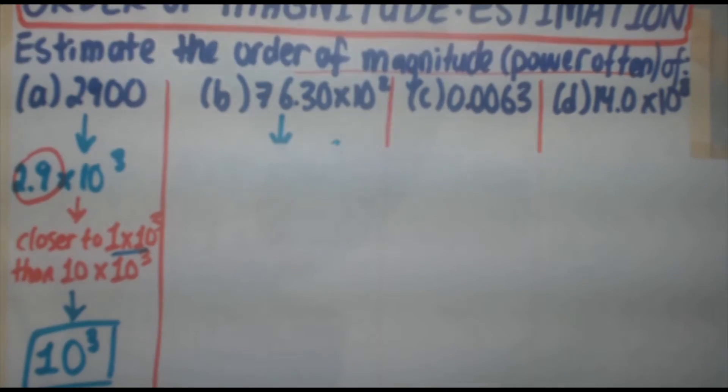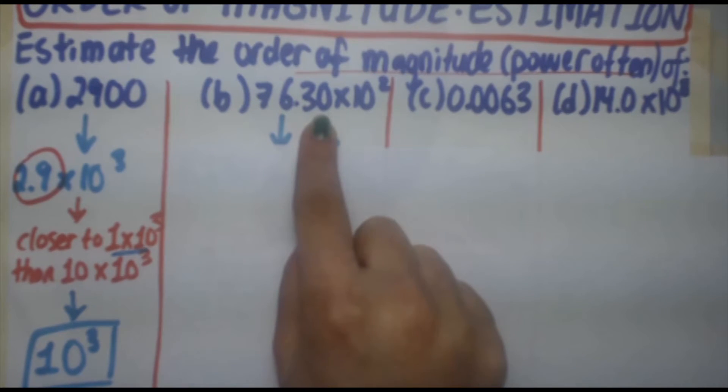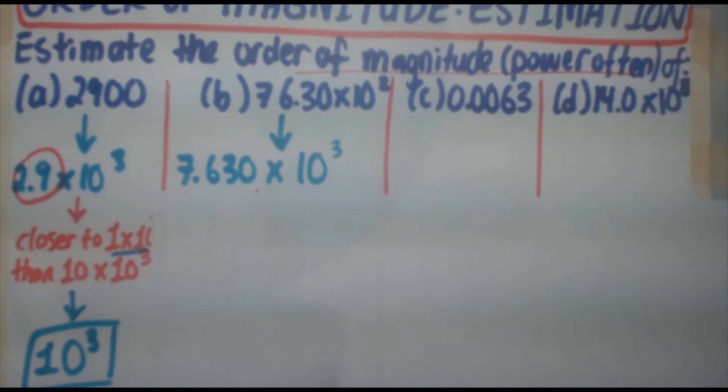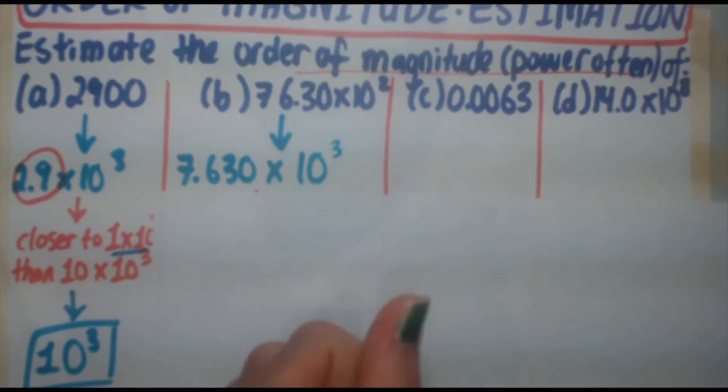So part B, 76.30 times 10 to the 2. Now, you might be saying, well, it's already given to us in scientific notation. But remember that the first number here should be between 1 and 10, not equaling 10. So rewriting that, we're going to get 7.630 times 10 to the 3. You move the decimal place 1 to the left. So it's got to move one more place to get back to where it needs to be.